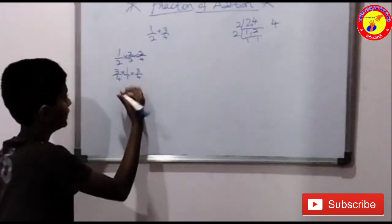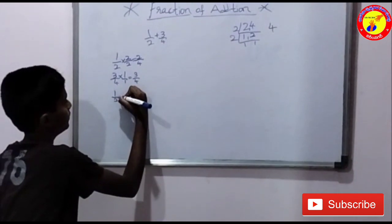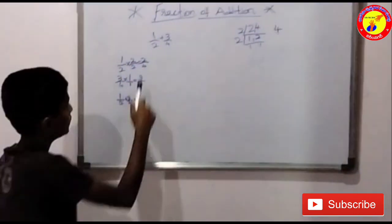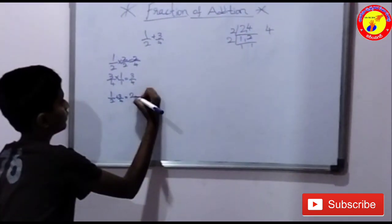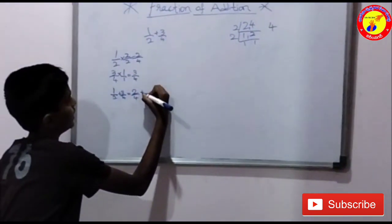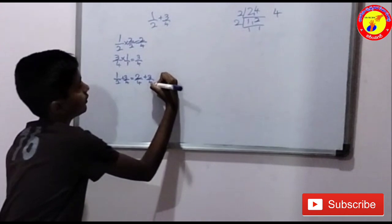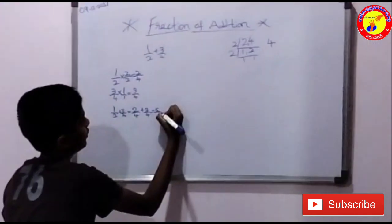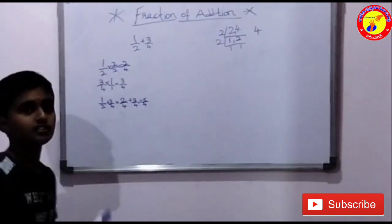We should write the question again. 1 by 2 plus 3 by 4 is equal to 2 by 4 plus 3 by 4. We should add them: 2 by 4 plus 3 by 4. The answer is 5 by 4.